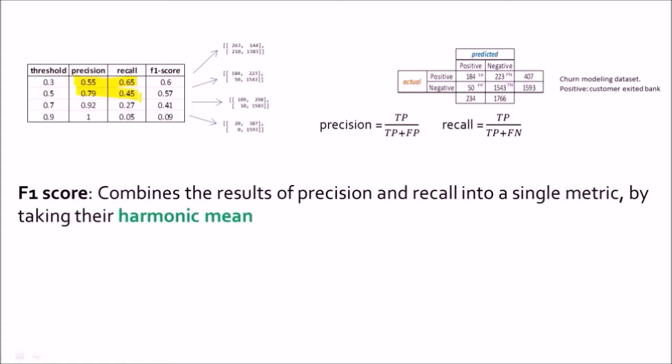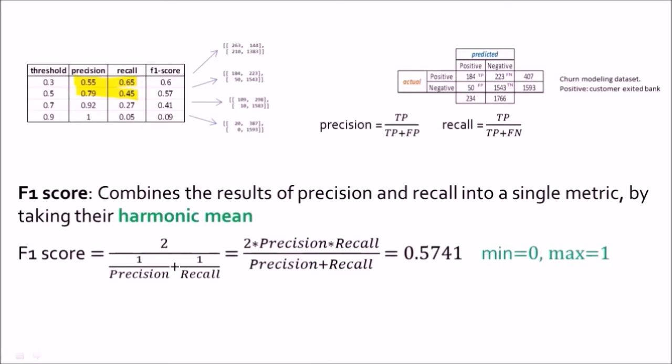It will combine the results of precision and recall into a single metric by taking the harmonic mean. So the F1 score formula looks something like this. Since it is harmonic mean, it is one divided by precision and one divided by recall in the denominator and in the numerator, it is the number of terms in the denominator. So we have two here. So two upon these two quantities and after simplifying it becomes twice into precision recall upon precision plus recall.